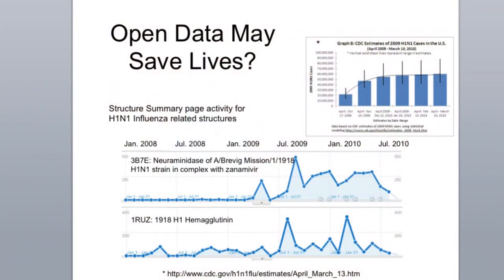So why is all this so important to me? Here's an example taken from our own work. This is from the database we maintain called the Protein Data Bank. In the top right-hand corner there is a graph showing the number of H1N1 cases in the United States maintained by the CDC over time. Correspondingly, our access to items of data in a public repository in response to this crisis shows a correlation between how the data was accessed and the crisis itself. In a time of crisis, this data becomes very important and is accessed correspondingly — so it's very important that data be available.